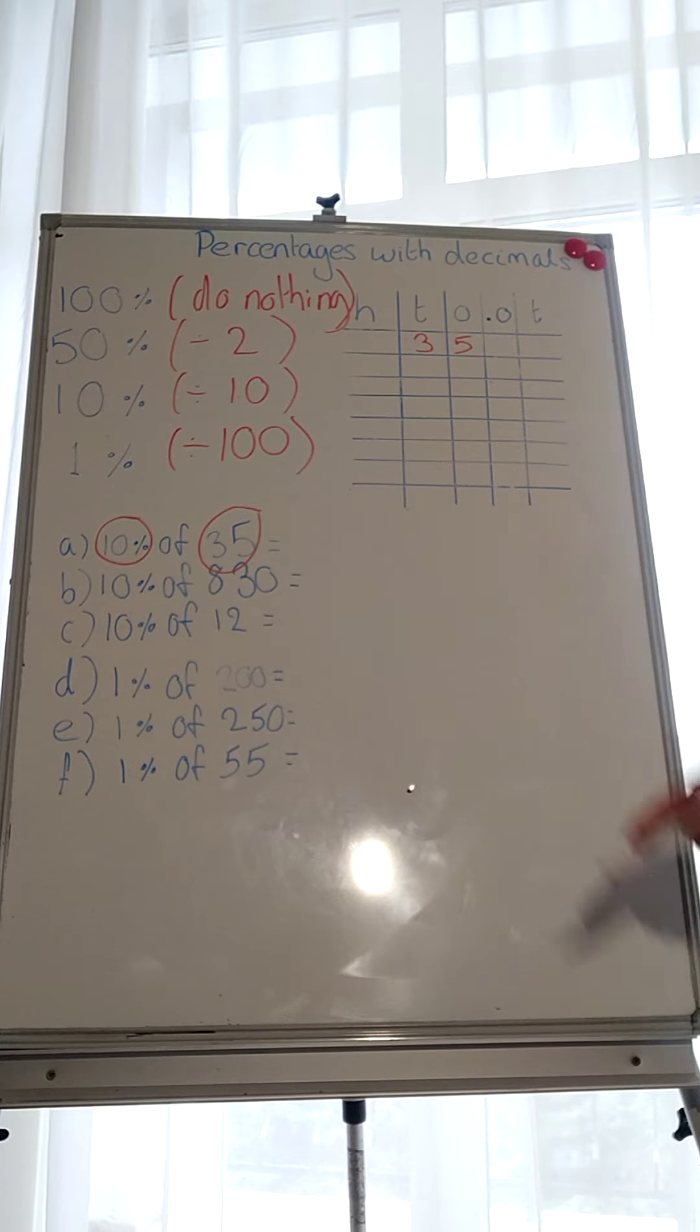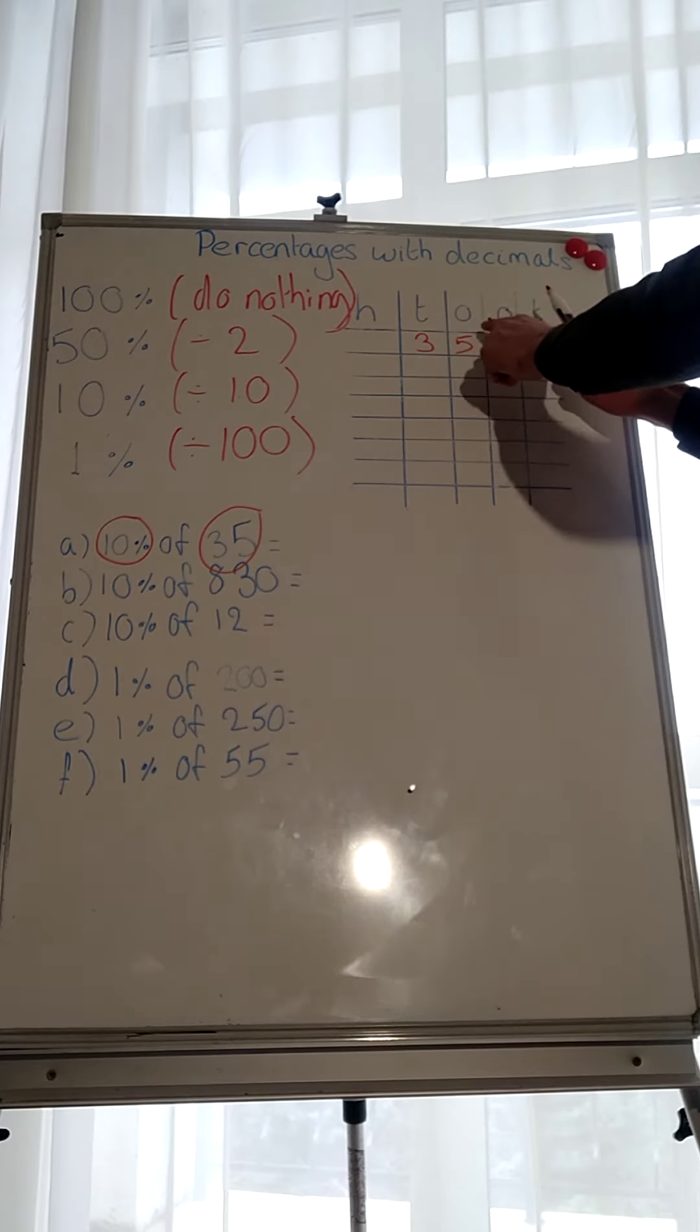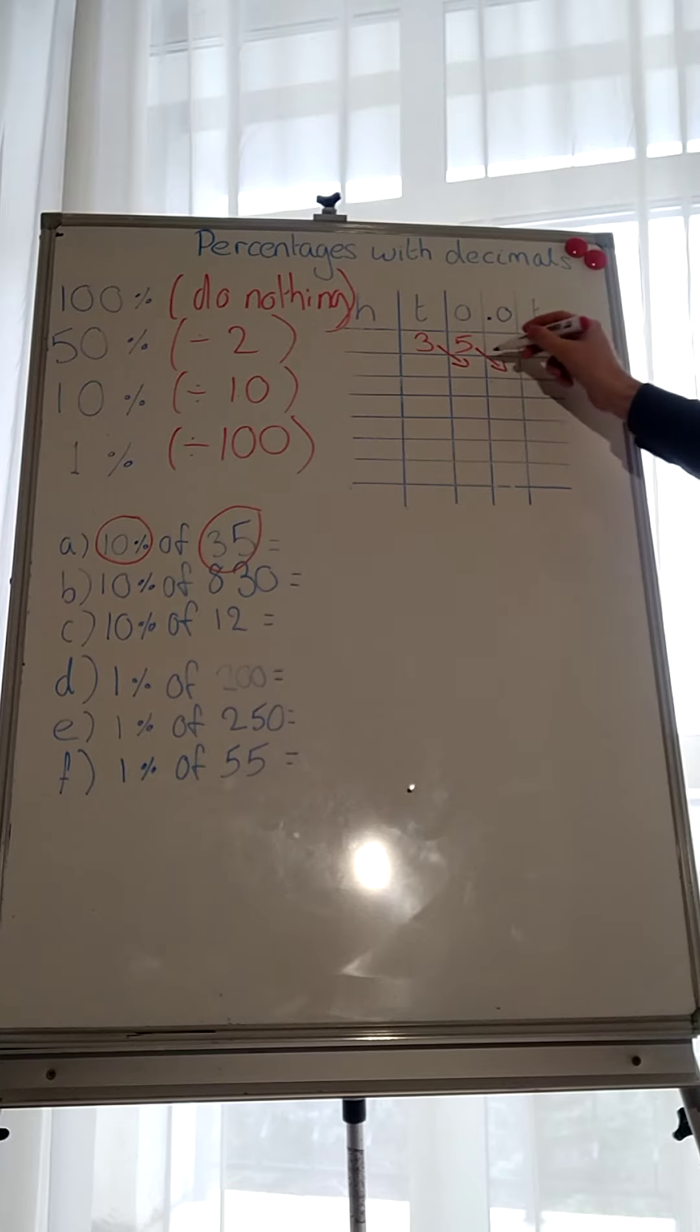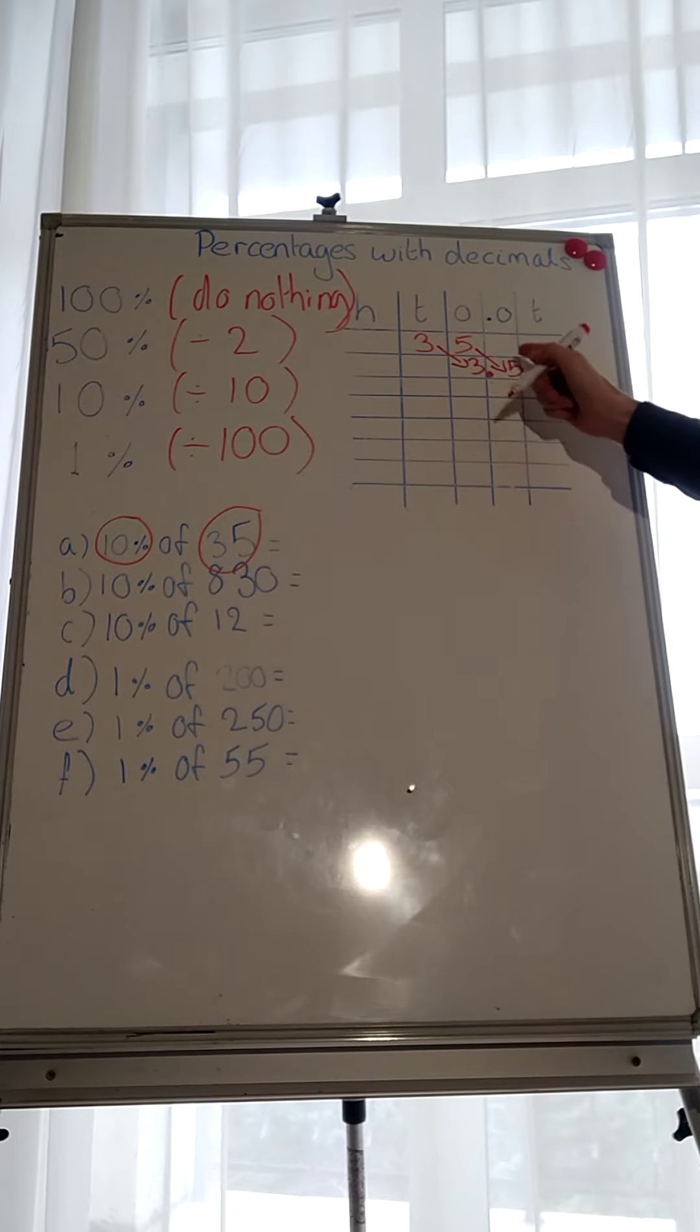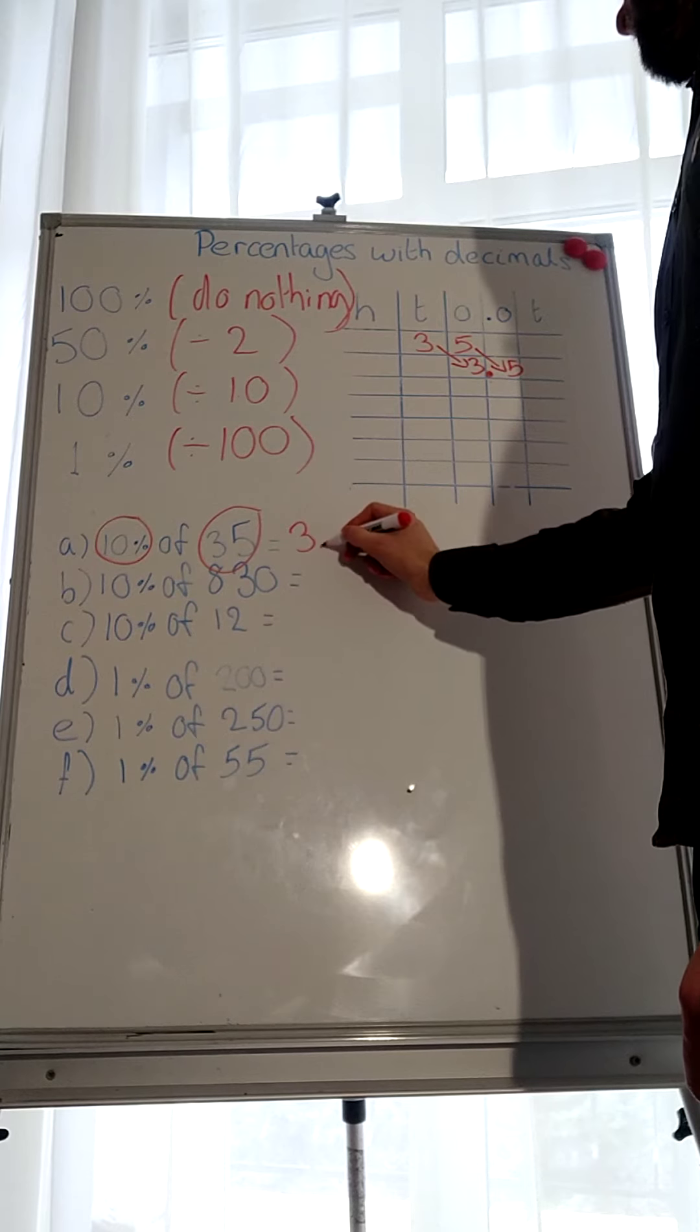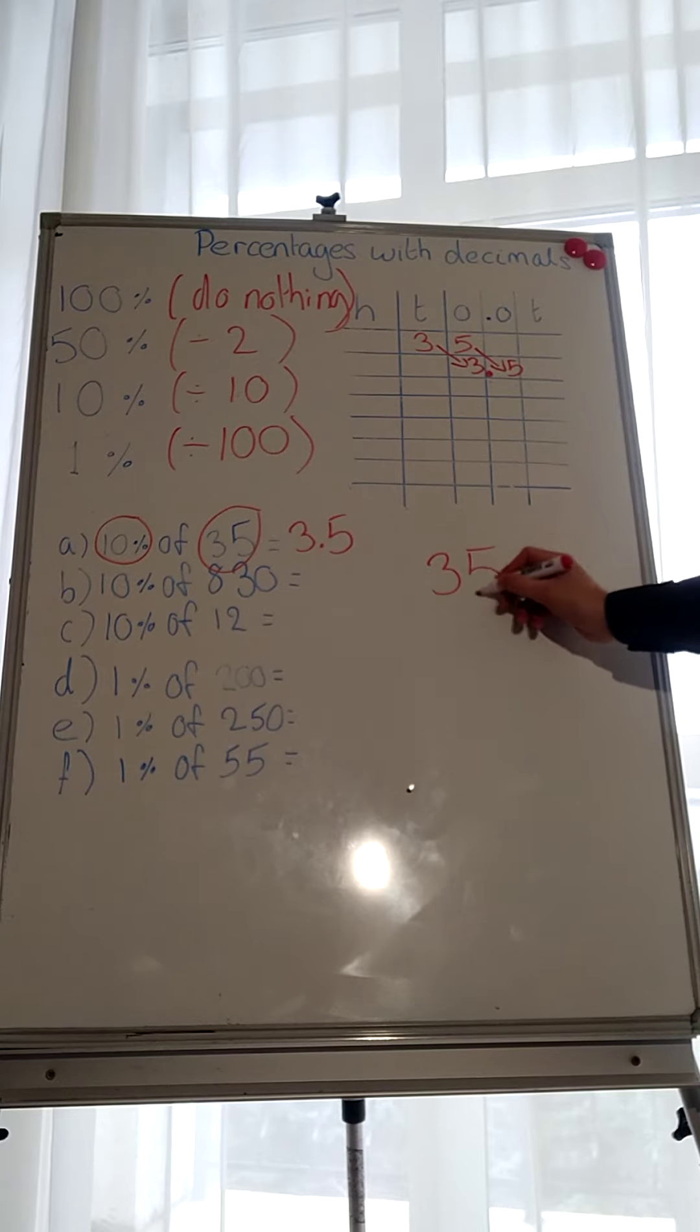So how are we going to do that? Here we have it on the place value chart. We're going to divide it by 10. A simple way to do it is we're going to move 3 and 5, 1 to the right. So if we do it like this. Let me write it in here. 3 and 5. What does that give us? It gives us 3.5. So 10% of 35 is 3.5.